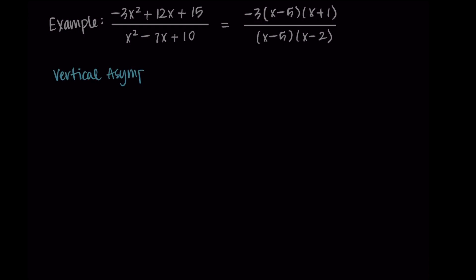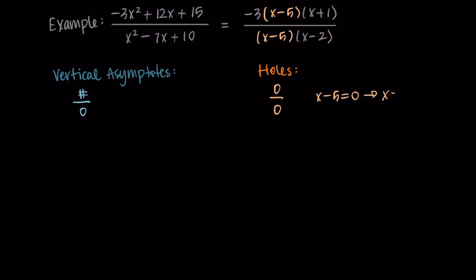Let's start with the vertical asymptotes and the holes. The vertical asymptotes occur where we have a non-zero number divided by 0, and holes are when we have 0 over 0. Looking for terms in both the numerator and the denominator, that's x minus 5 — setting x minus 5 equals 0 gives x equals 5, so that's our hole. The remaining denominator term x minus 2 gives us our vertical asymptote: x minus 2 equals 0 gives x equals 2. When we substitute 2 into the function, we get some number divided by 0 — that's our vertical asymptote.